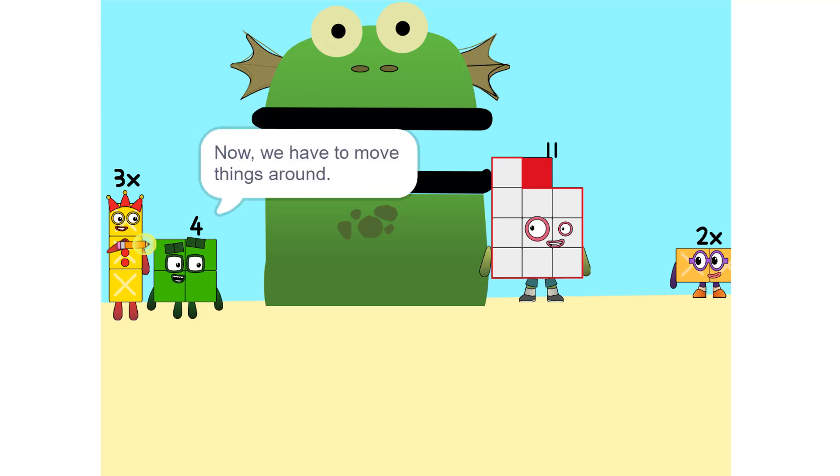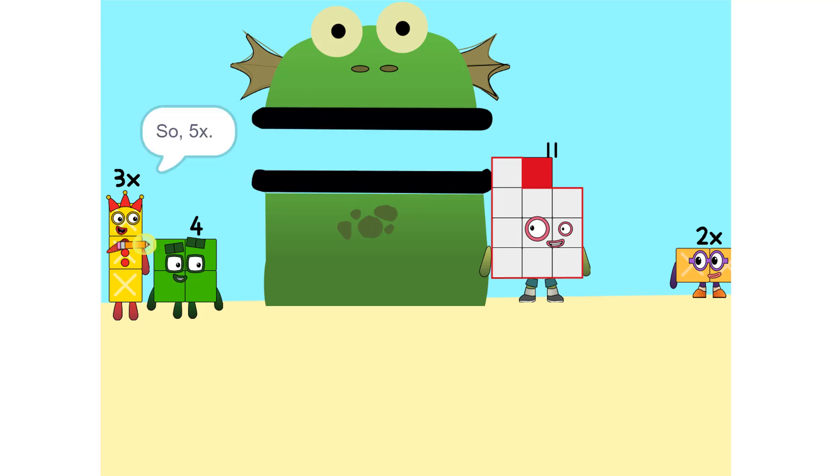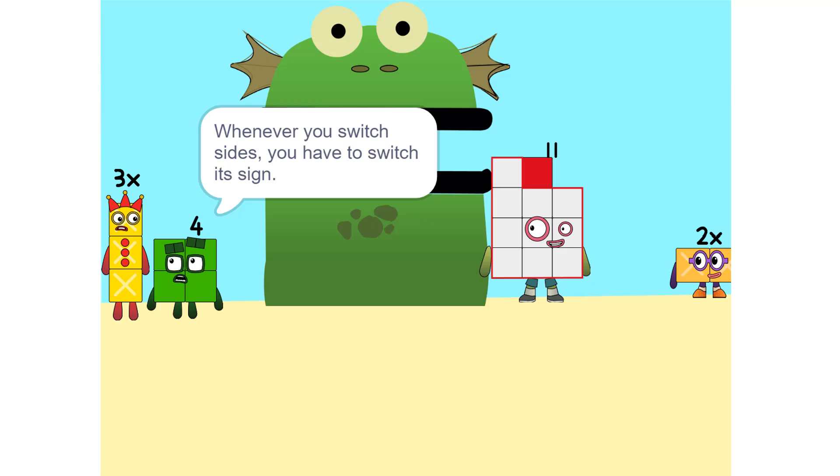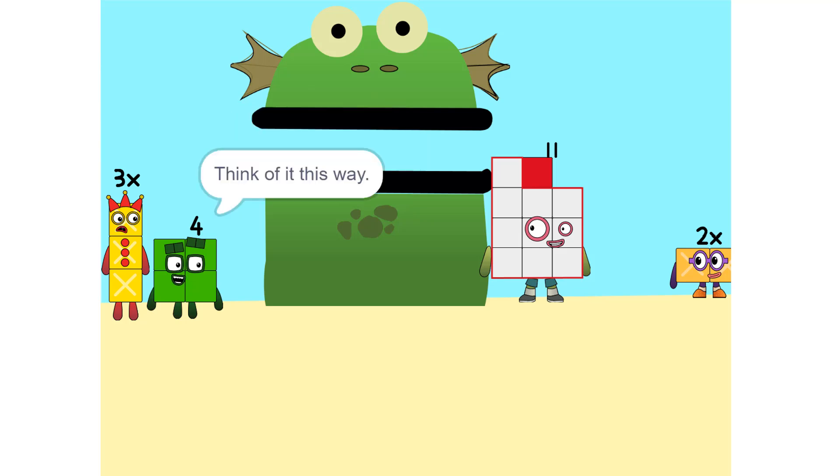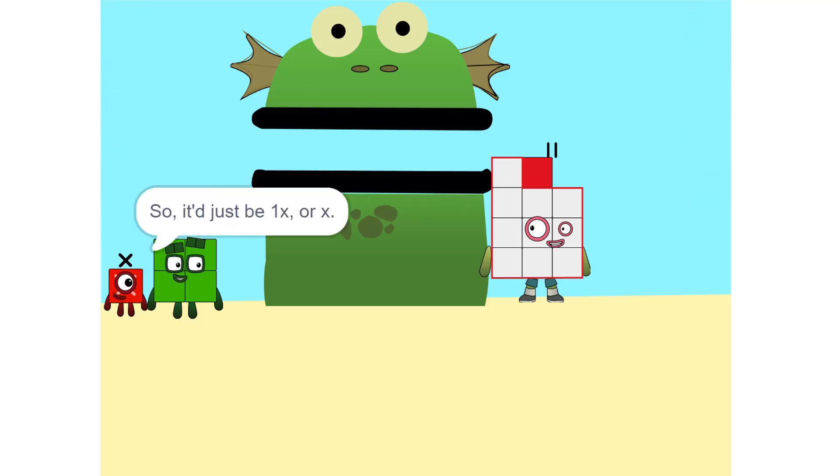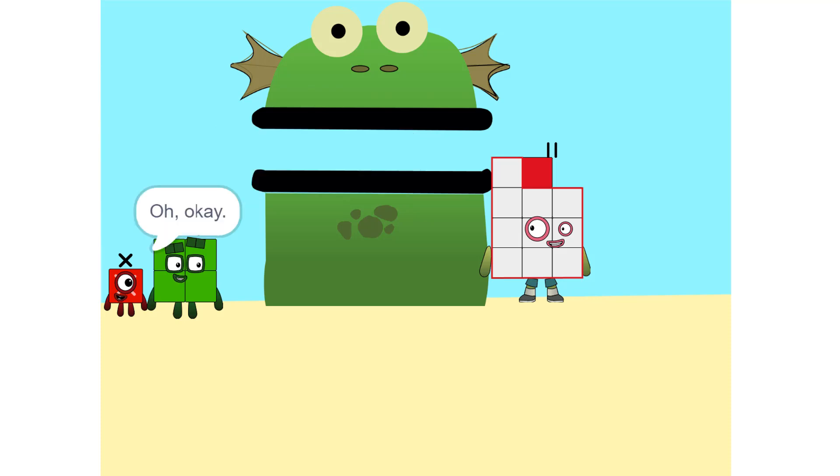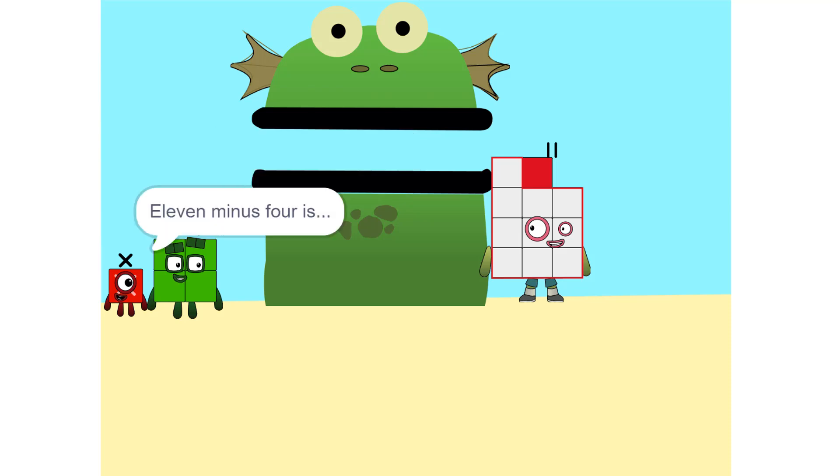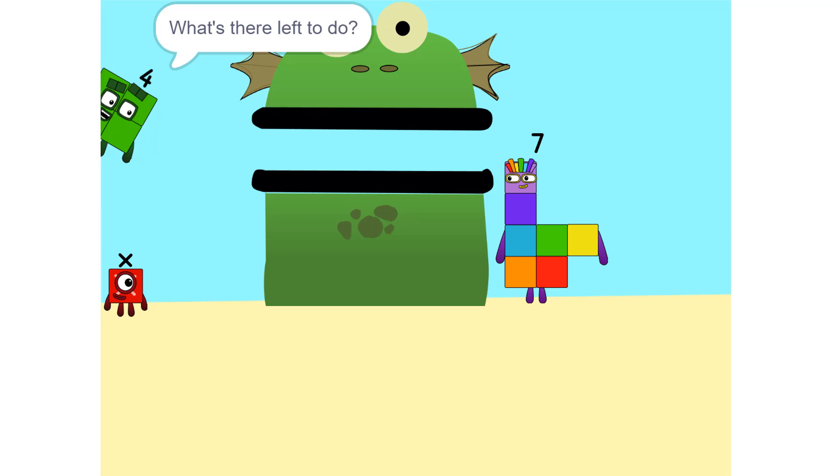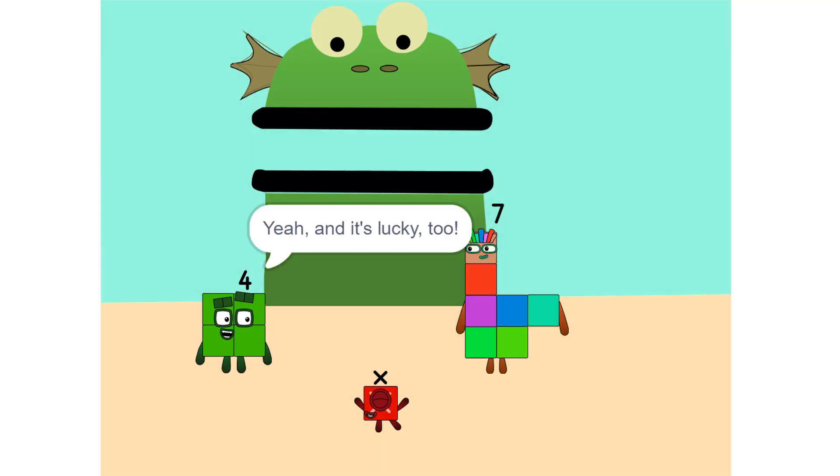Now we have to move things around. We have to move this 2X to this side. Oh, so 5X? Whenever you switch sides, you have to switch its sign. So if it's positive it becomes negative and vice versa. Why? Think of it this way. You're subtracting 2X from each side. Oh, so it'd just be 1X or X. Correct. Now do the same with the 4. Oh, okay. 11 minus 4 is 7. So now what do I do? What's there left to do? Oh, X equals 7, so I'm 7! Yeah, and it's lucky too.